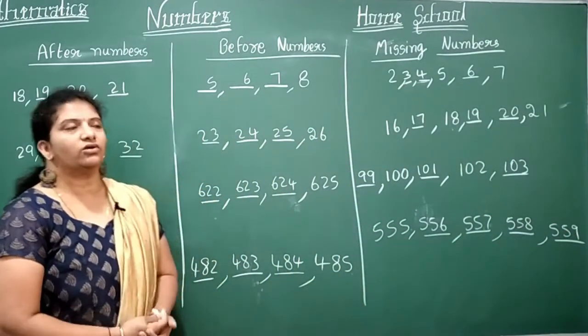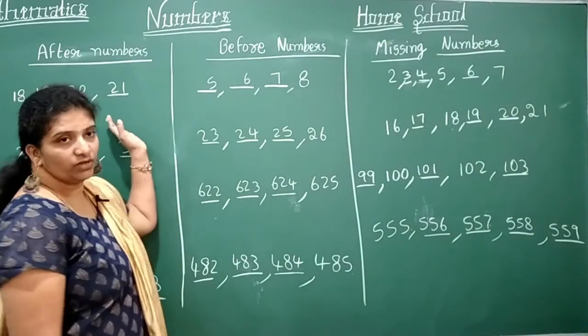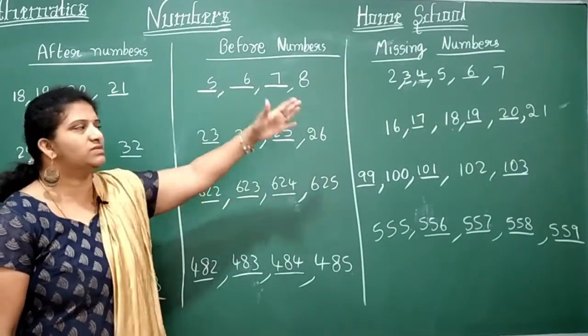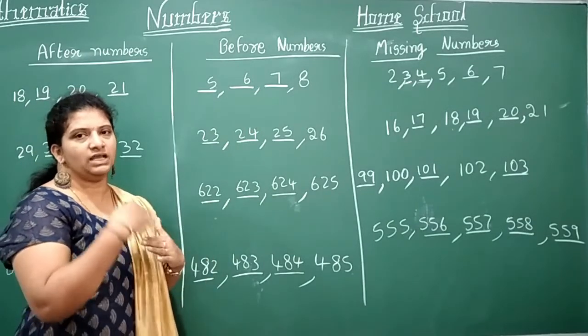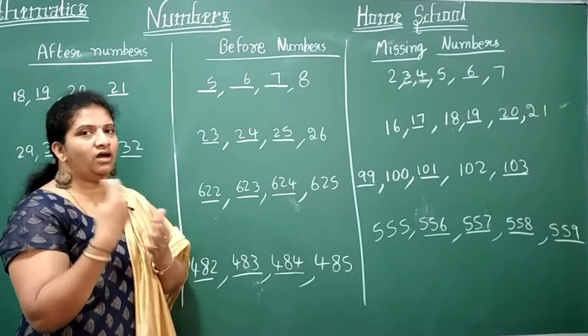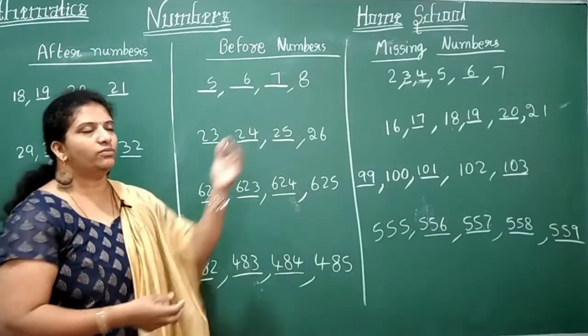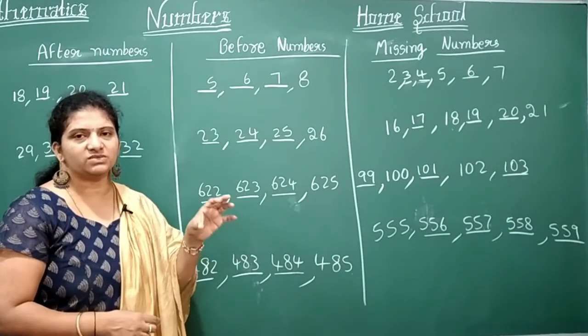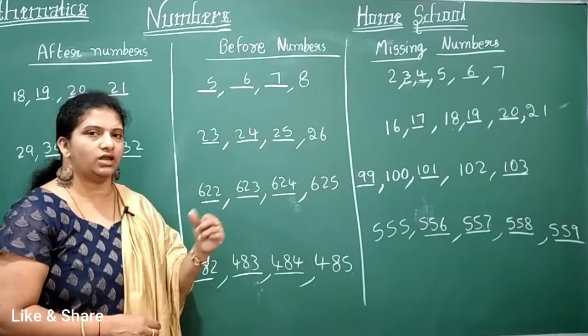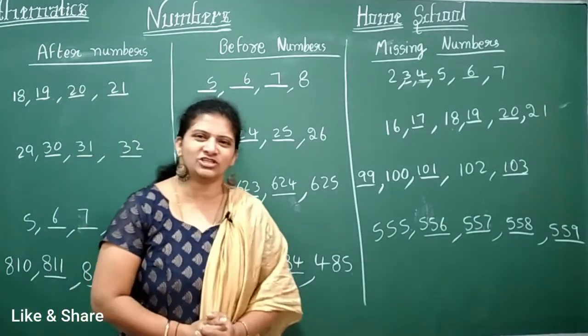Same number. Here children, what you have learned in this session. Forward numbers, backward numbers, missing numbers. Forward is the next number. Backward is the number which comes from the back side or reverse order. Missing number is the number which is missed in between the numbers or any before numbers or after numbers. Thank you children. Thank you for watching.